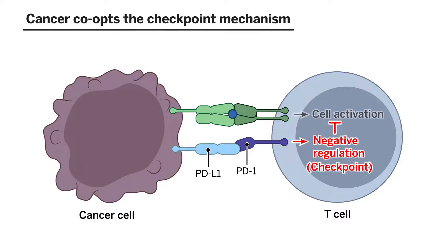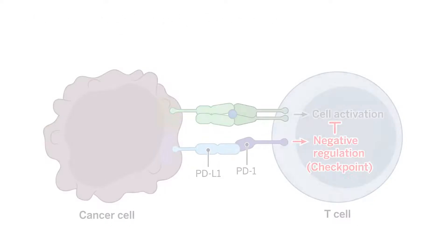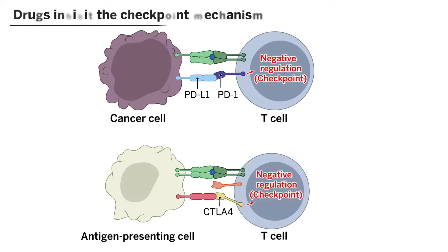Cancer has a way of co-opting the immune system and evading it. And so, in order to have adaptive immune system activation to recognize cancers, drugs have been developed against PD-L1, the ligand, and against PD-1 on the T-cell, and against CTLA-4.